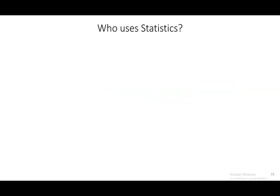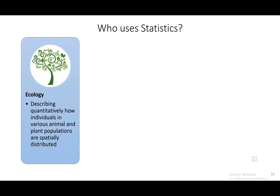So who uses statistics? In short, statistics is everywhere. Ecology is one place — you might want to describe quantitatively how certain animal and plant populations are spatially distributed. I had a friend doing an analysis on snow leopards, and since snow leopards don't really want to be found, they had to figure out a way to more accurately estimate how many leopards were there.